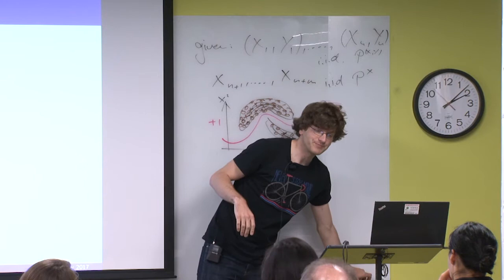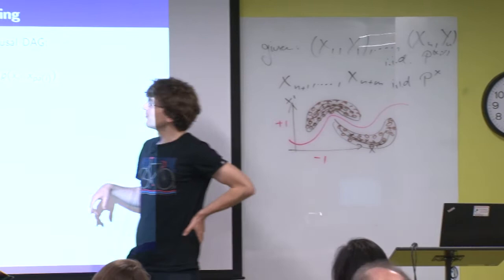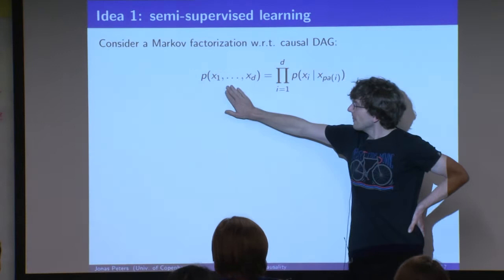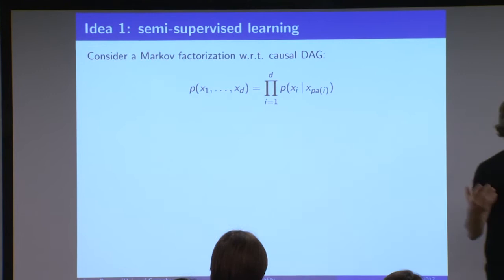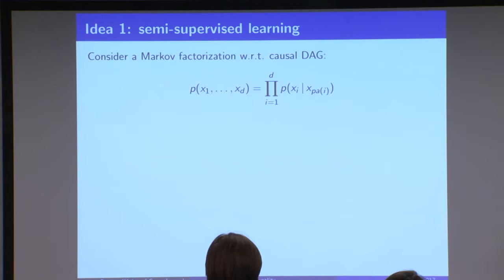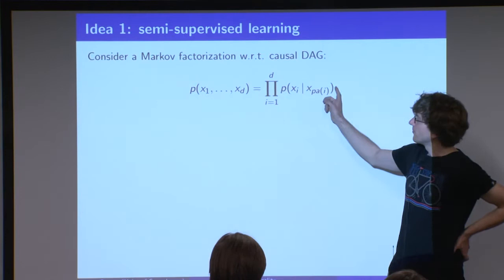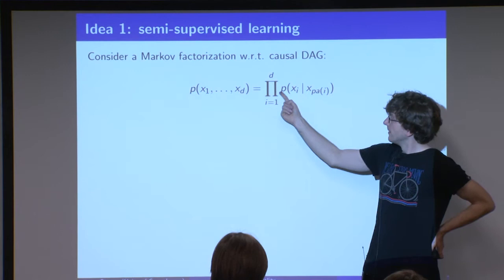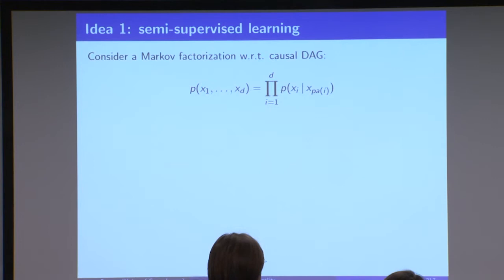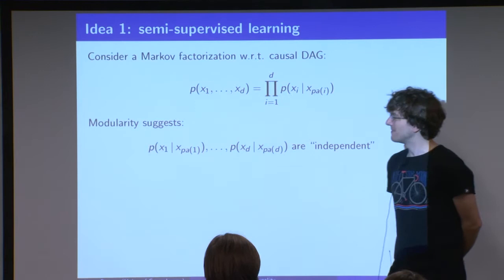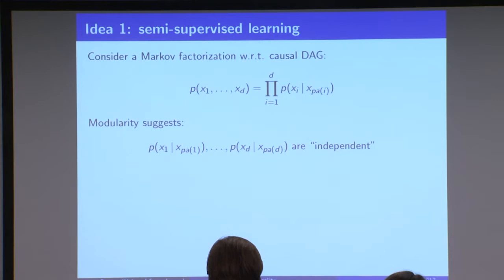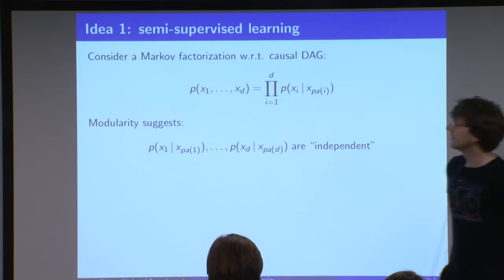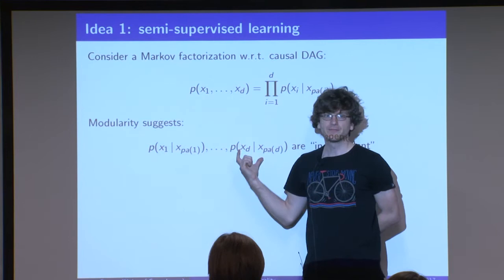Here we have the Markov factorization — the distribution is Markov with respect to a graph if we can write the joint density as the product of these Markov kernels, where each is the density of a variable given its parents. Now there's an assumption sometimes called modularity or autonomy, which basically says that all these components are independent. There is old work from econometrics on this. If you look at a causal model, this is an assumption that is very crucial to all we are doing in these two days.